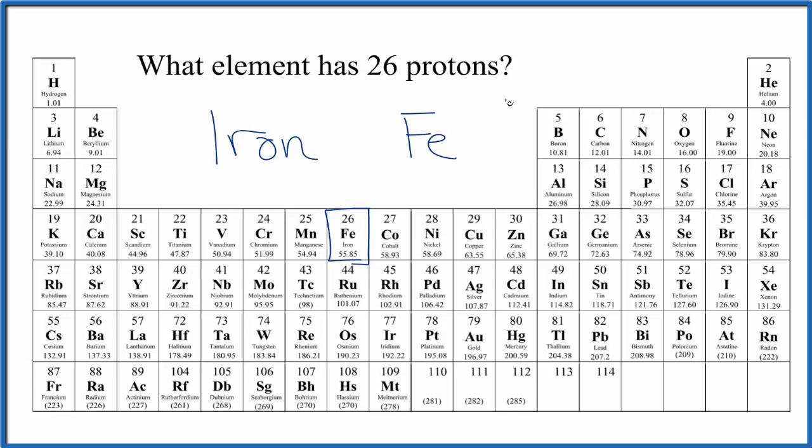So to recap, to find the number of protons, all you need to do is look at the atomic number. That's the number above the element symbol on the periodic table, and that'll tell you how many protons you have.